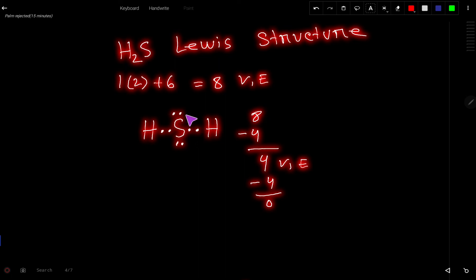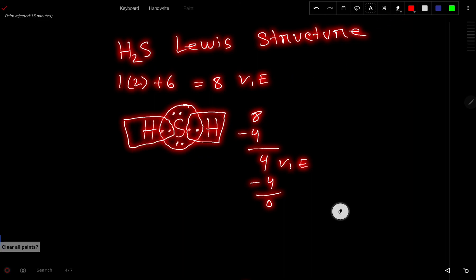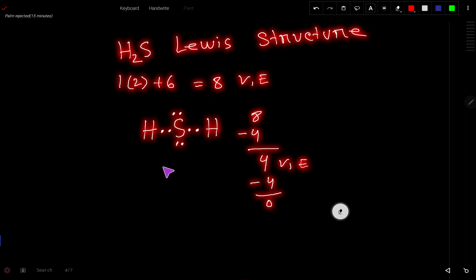Now, look, this sulfur already has an octet. This hydrogen already has a duet. And this hydrogen already has a duet. So, this is the correct Lewis structure for hydrogen sulfide or H2S, right?